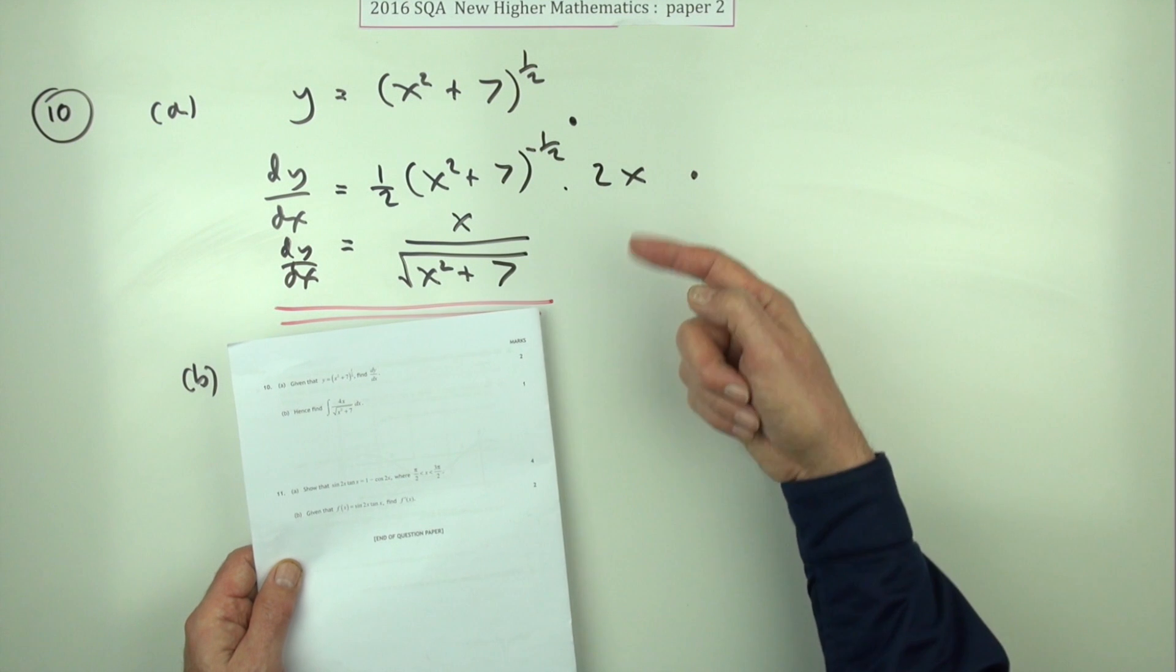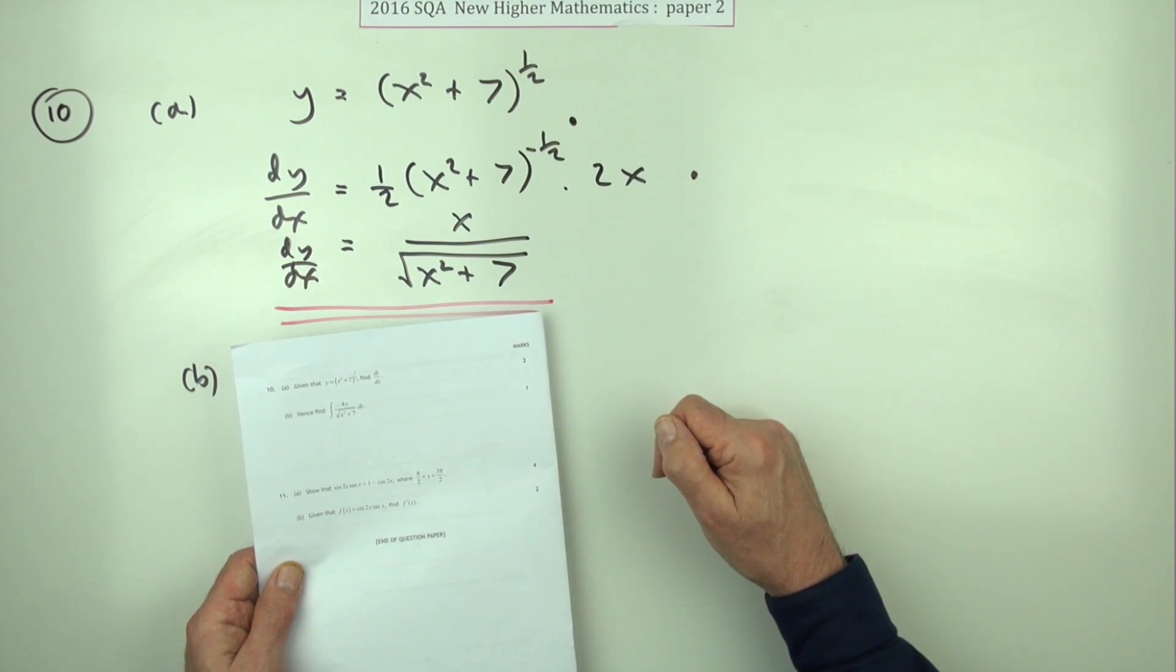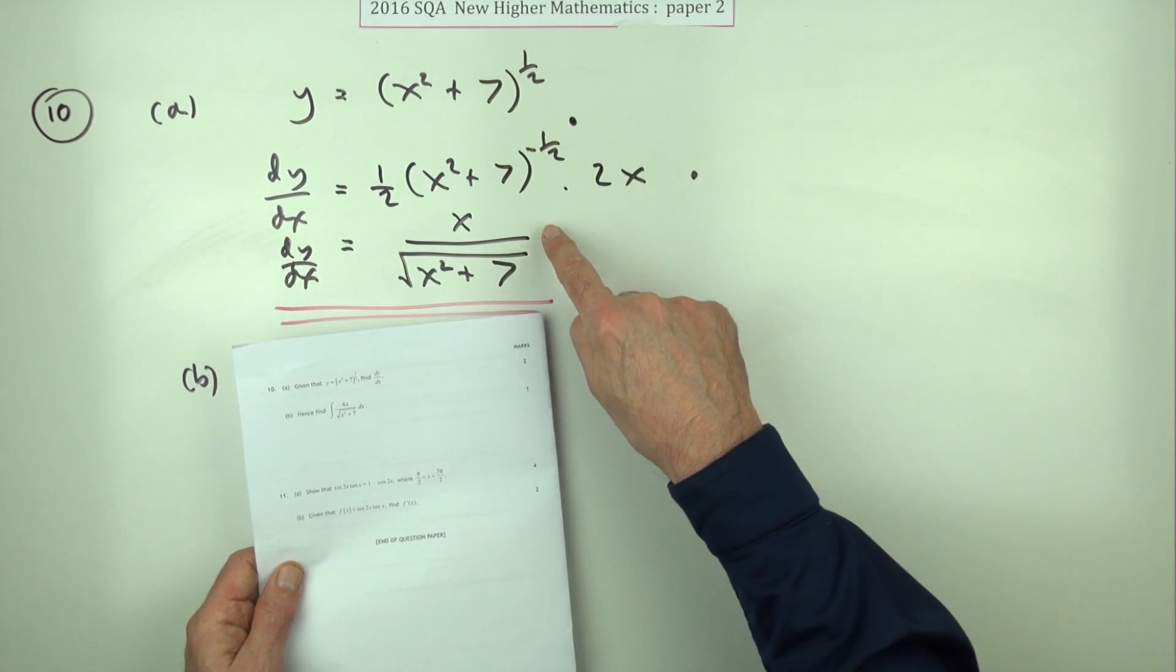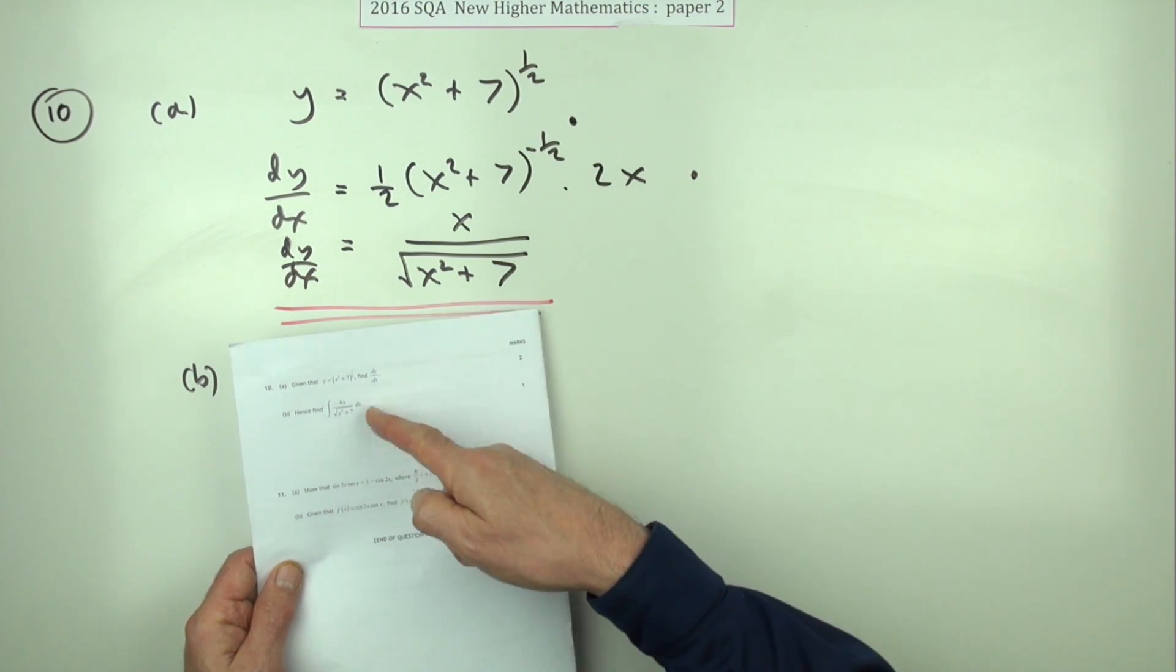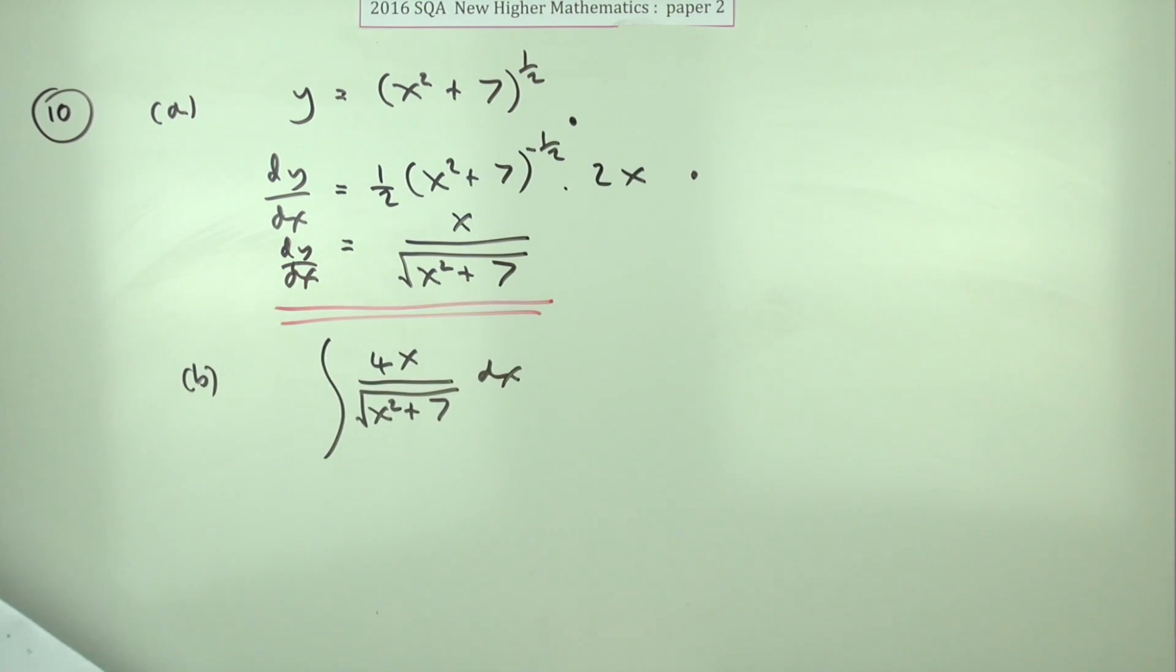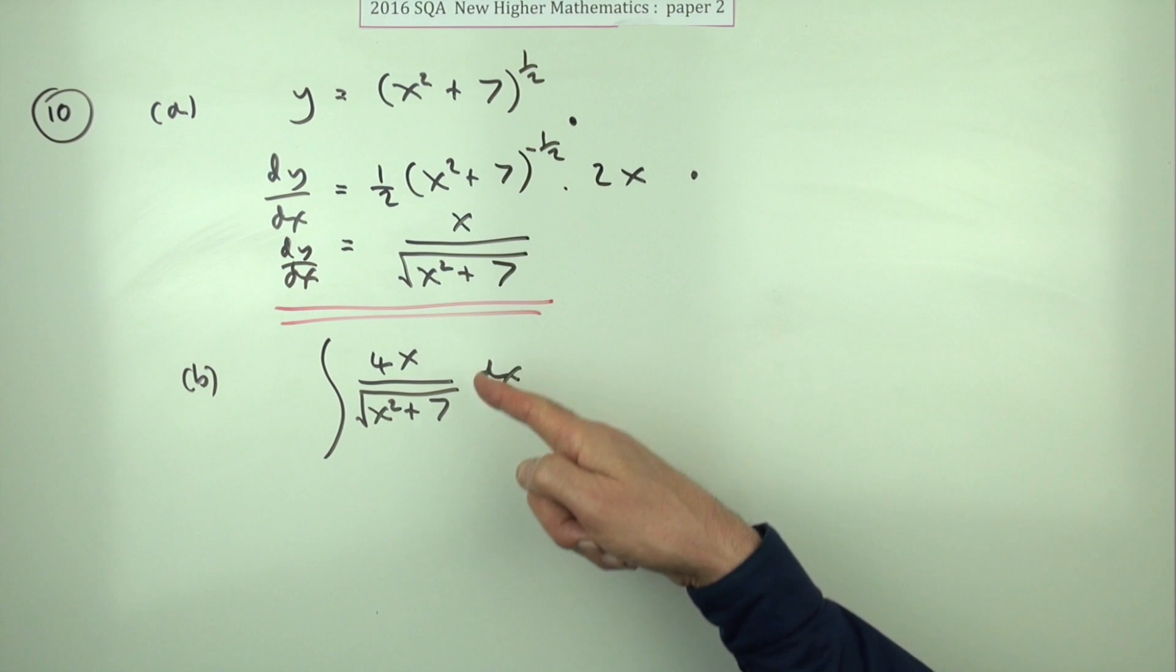Now whereas that would have got you the two marks in part a, writing in this form, simply by glancing at the next part of the question, makes the second part quite easy to understand because looking at them, they're more or less the same.